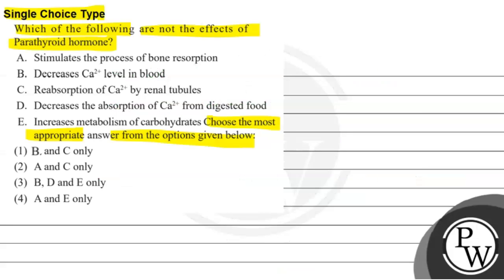Looking at the functions, option A — stimulate the process of bone resorption — yes, this is an effect of parathyroid hormone. Option B — decrease calcium levels in blood — this is not correct, because parathyroid hormone actually increases calcium in blood through reabsorption of calcium ions by renal tubules. Option C — decrease absorption of calcium ions from digested food — this is also not an effect; parathyroid hormone increases absorption. Option D — increase metabolism of carbohydrates — this is not an effect; parathyroid hormone decreases carbohydrate metabolism.